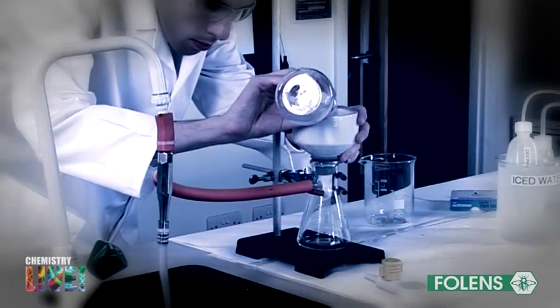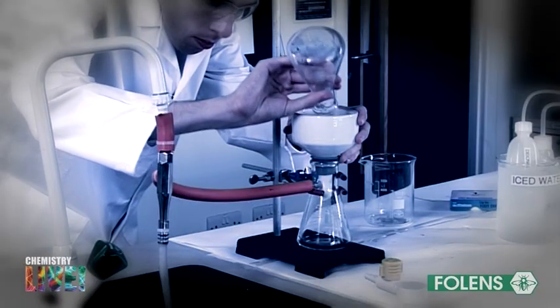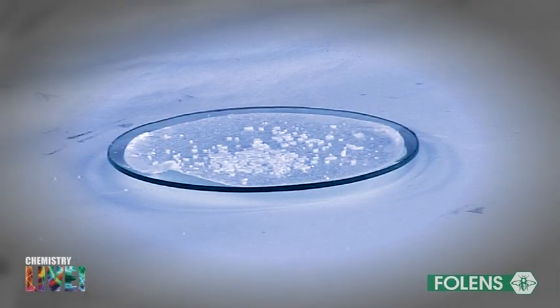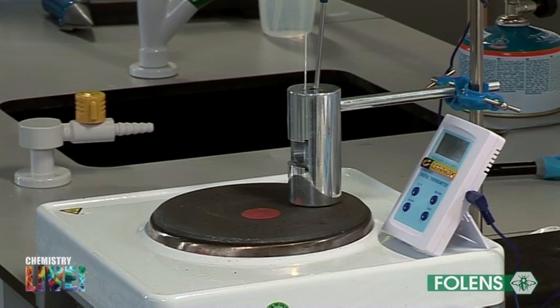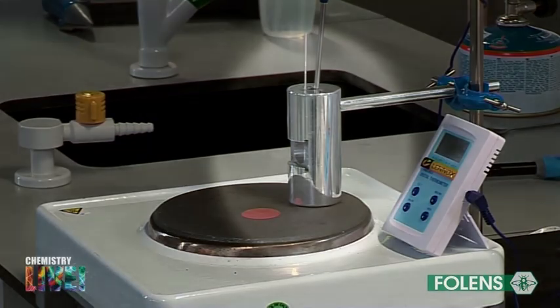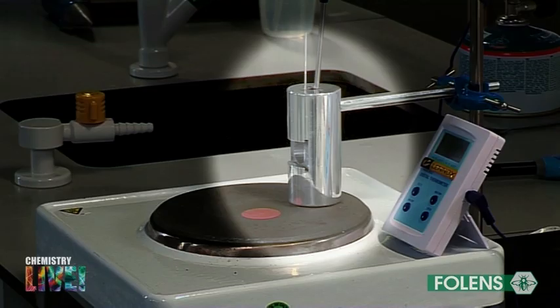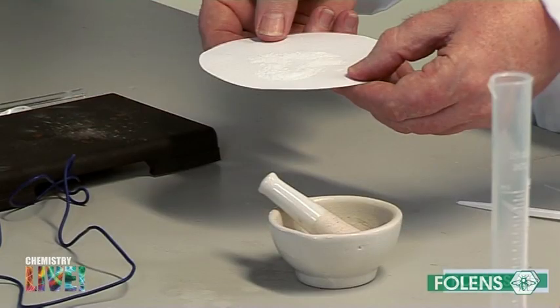In this experiment, we will measure the melting point of the benzoic acid crystals formed in the first half of the experiment. Since the melting point of benzoic acid is greater than 100 degrees Celsius, we use an aluminium melting point block. We had to leave the crystals air dry overnight as an incorrect result would be obtained for the melting point.